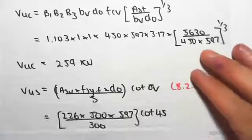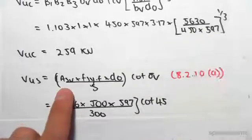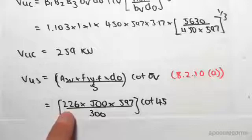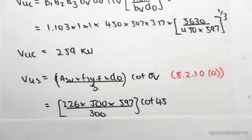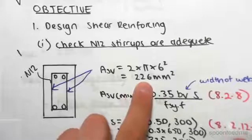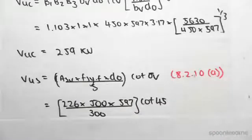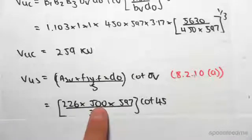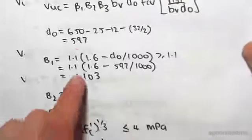Now subbing in each of the components, the area of steel in shear, we said in the beginning, was the two N12 bars, which was 226 mm². The yield stress of steel is 500 MPa. D0, we found in the previous video, to be 597.